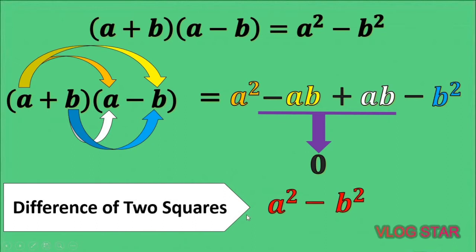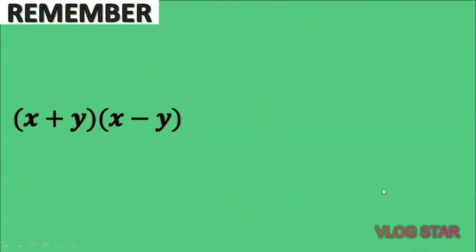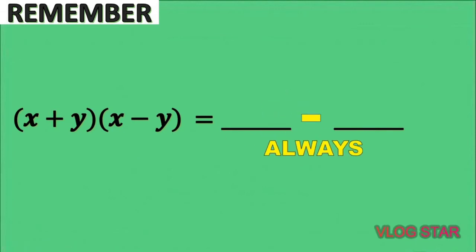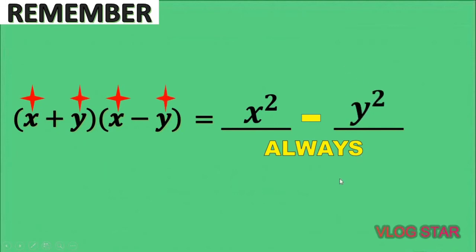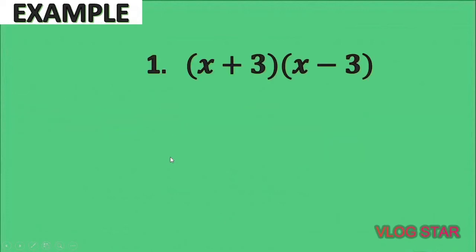This a squared minus b squared is an example of a difference of two squares. From the name itself, both terms are perfect squares and they are separated by a minus sign. So remember: to multiply two binomials of this form — almost alike, one containing plus and the other minus — the result is also a binomial. The operation is always minus. For the first term, square the first term of the given; for the second term, square the second term of the given. Let's practice.